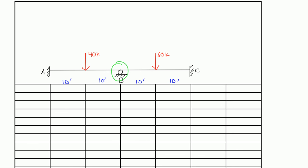The first row is always your distribution factor. The distribution factor is a factor used at a joint to distribute the initial moment at that joint to the opposite ends of that span. To calculate distribution factors, your distribution factor is the k value of the span divided by the sum of the k values of all the spans.